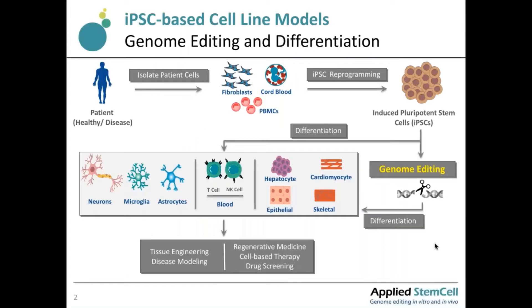As you know, iPSCs have great potential for both research and therapeutic applications. Basically, iPS cells can be isolated from any adult somatic cells — for example, from a patient or healthy donor — such as fibroblasts, cord blood, or PBMC donor cells. These cells can be reprogrammed into induced pluripotent stem cells, or iPS cells, which can then be genetically modified to make or correct mutations, or differentiated into any cell type in the human body, such as neurons, blood cells, hepatocytes, epithelial cells, muscle cells, and cardiomyocytes.